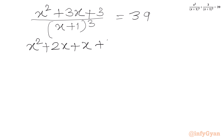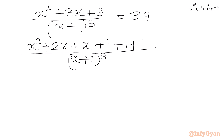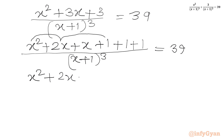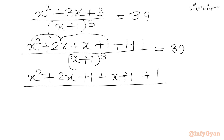And 3 I can write as 1 plus 1 plus 1, over (x+1)³ equal to 39. Now I will consider x², 2x, and 1 in one bracket — so x² + 2x + 1, which is (x+1)². Then we have the remaining x and two 1s.